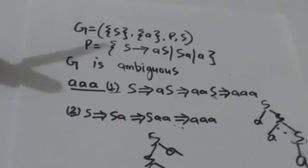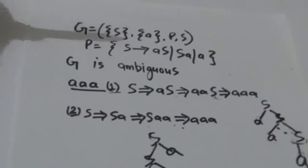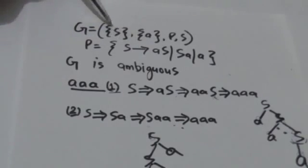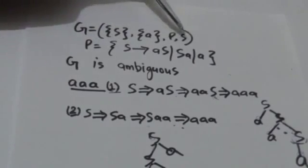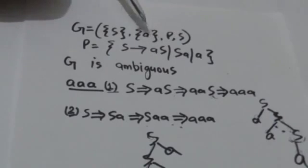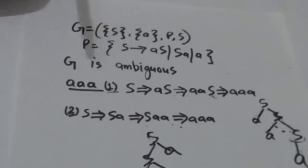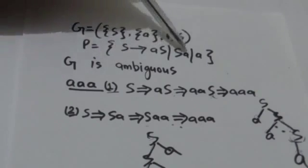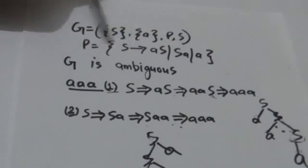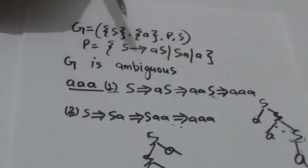It would be more clear after this example. Consider this grammar G — it has one variable S which is a start symbol, one terminal that is a small 'a', and P is a set of production rules. These are the productions in set P: S derives AS, S derives SA, and S derives A.